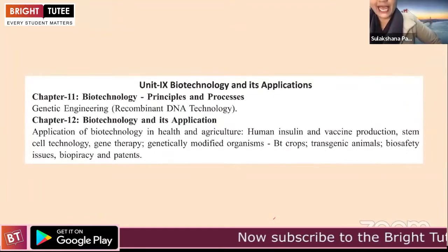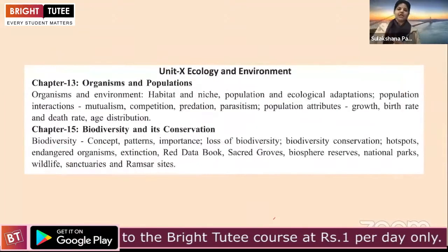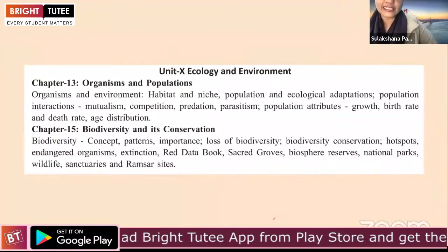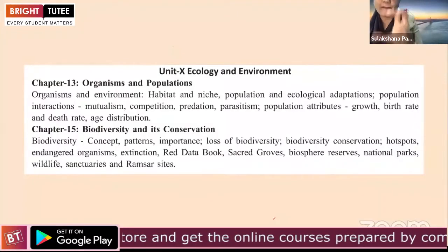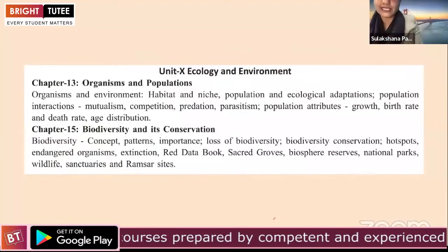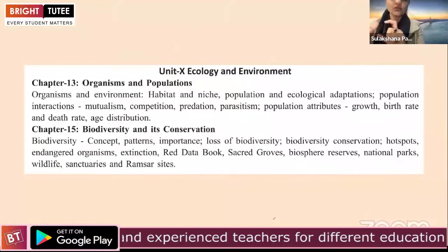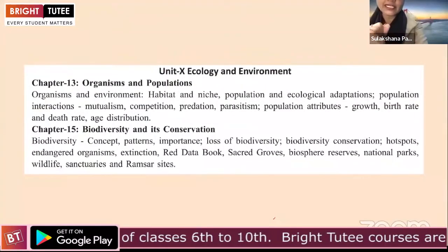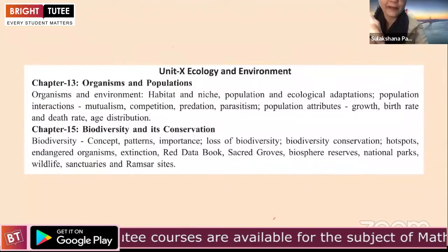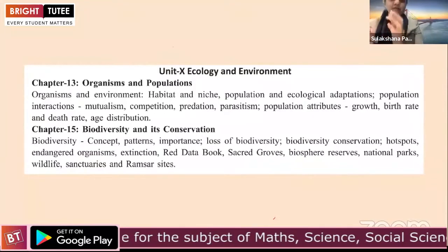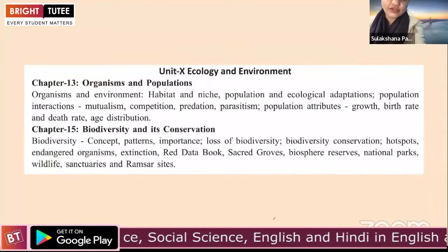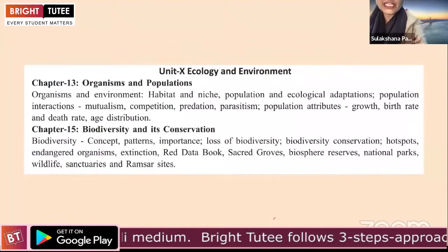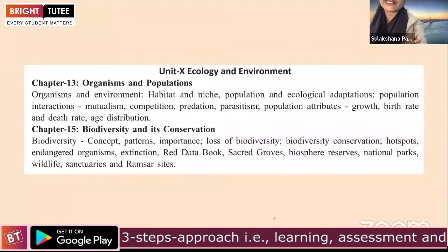Unit 10 is Ecology and Environment. Chapter 13 — Organisms and Population — requires focus on population interactions and two growth models: exponential growth and the logistic growth curve. The age pyramid is a very important topic. Chapter 15 is Biodiversity and its Conservation. Note that Chapters 14 and 16 are deleted from this unit. These two chapters carry 10 marks.